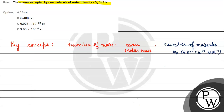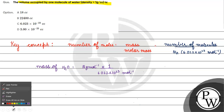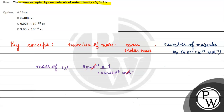Now, we have mass of water. Mass of water equals the molecular mass of water, which is 18 gram per mole, multiplied by the number of molecules of water divided by Avogadro's number, 6.022 × 10²³ mol⁻¹. The mole units cancel, giving us mass of water = 18 / (6.022 × 10²³) grams.